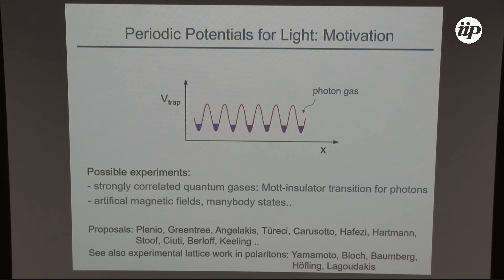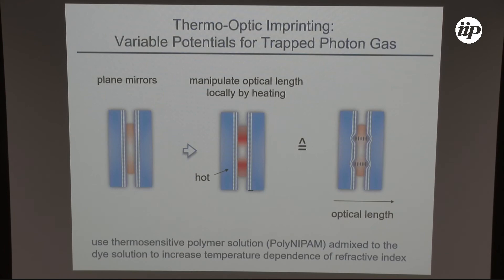The motivation to study lattice potentials is to study strongly correlated quantum gases, Mott insulator transitions for light, to realize artificial magnetic fields, and to realize quantum many-body states — there are many proposals and first experiments in the field of polaritons. To realize periodic potentials for light, you want to change the optical length between mirror surfaces as a function of transverse position. What we do is not change the physical spacing between mirror surfaces but only the refractive index as a function of transverse position, relying on the thermo-optic response. To increase the thermo-optic response of our dye solution, we add a thermosensitive polymer solution to our dye.